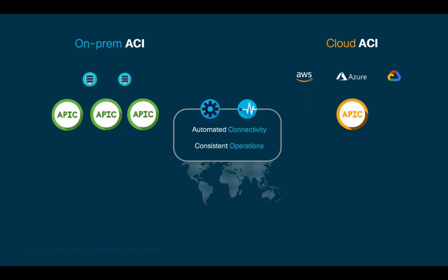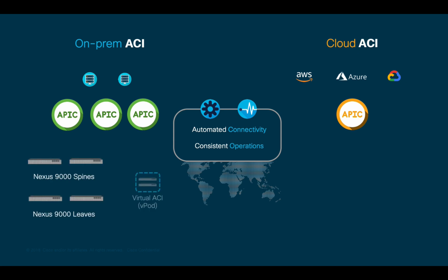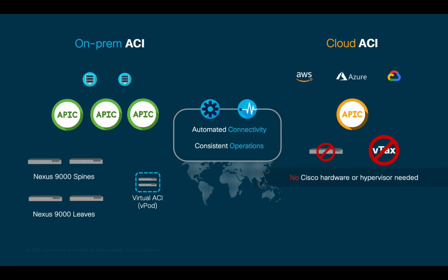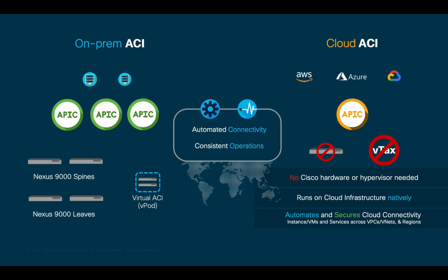After the APIC is up and running, we would normally continue to discover spine and leaf nodes if we were running on-premises. However, in the cloud this is a little different, since we don't know what hardware or switches each cloud provider is running. We want to maximize the usage of cloud-native services without dictating which switches or hypervisors you should use in the cloud. Therefore, Cloud ACI runs on the cloud provider's infrastructure natively, normalizing, automating, and securing each cloud provider's connectivity model using their own services across multiple regions.